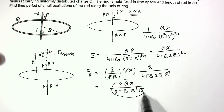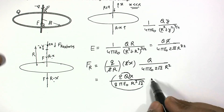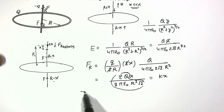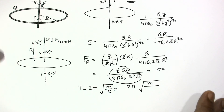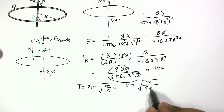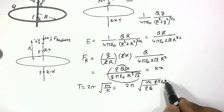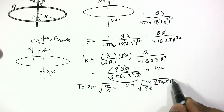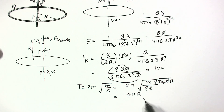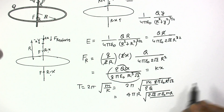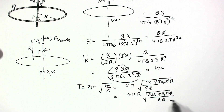Since the force is proportional to x, this is like F = kx form, so the time period is T = 2π√(m/k). Here k = Qq / (8πε₀r³). After rearranging terms, the final answer for the time period is T = 4π√(2πε₀mr³ / Qq).